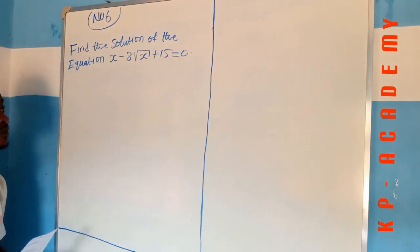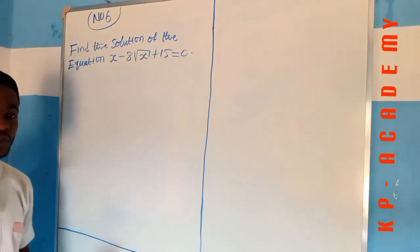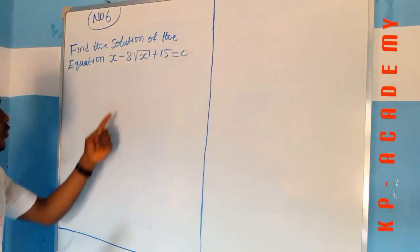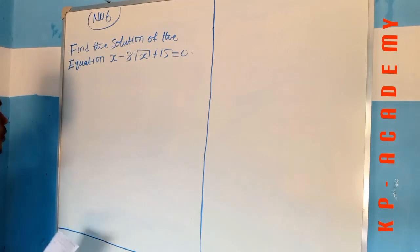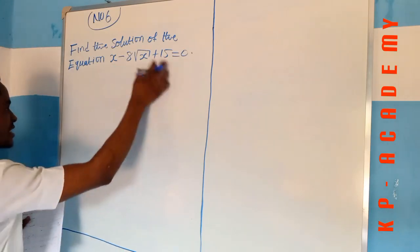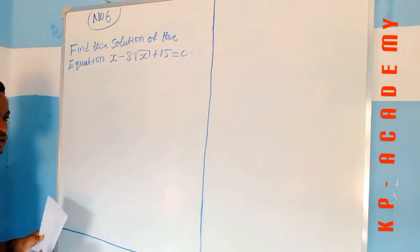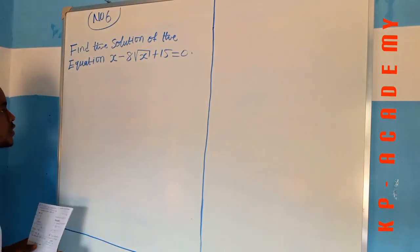One thing I want you to have in mind is that this equation you see here is actually a quadratic equation. Even though it does not look like a quadratic equation because it does not have x squared, we are going to arrange it in the order of quadratic equations so that we can solve it like a quadratic equation.